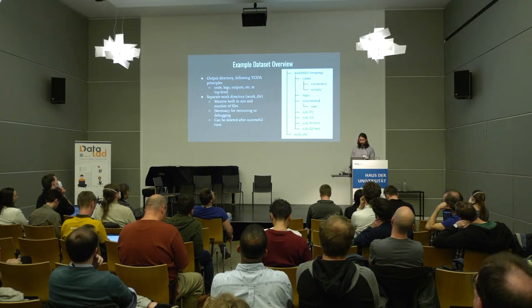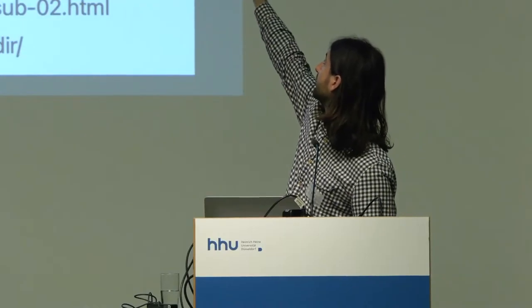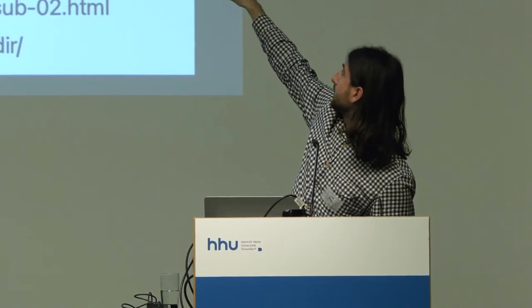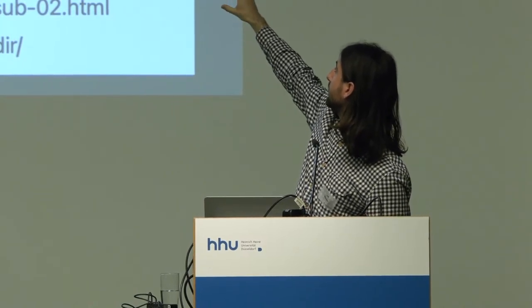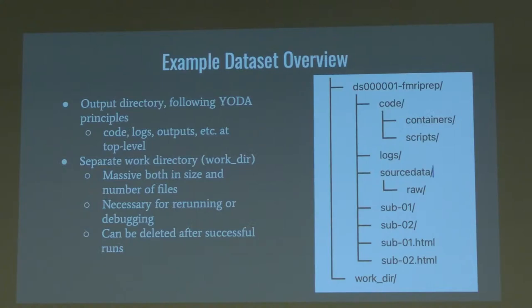To give an overview of what the datasets look like: we're using YODA principles. We have DS001 at the top with fMRIPrep — that's the main dataset — and we have a code directory, logs, and outputs all at the top level. There's also a separate work directory outside of all this, which can be deleted after the fact, but is used during processing. If you need to debug or if a job failed, you need to keep that around — and it's huge and generates like millions of files.